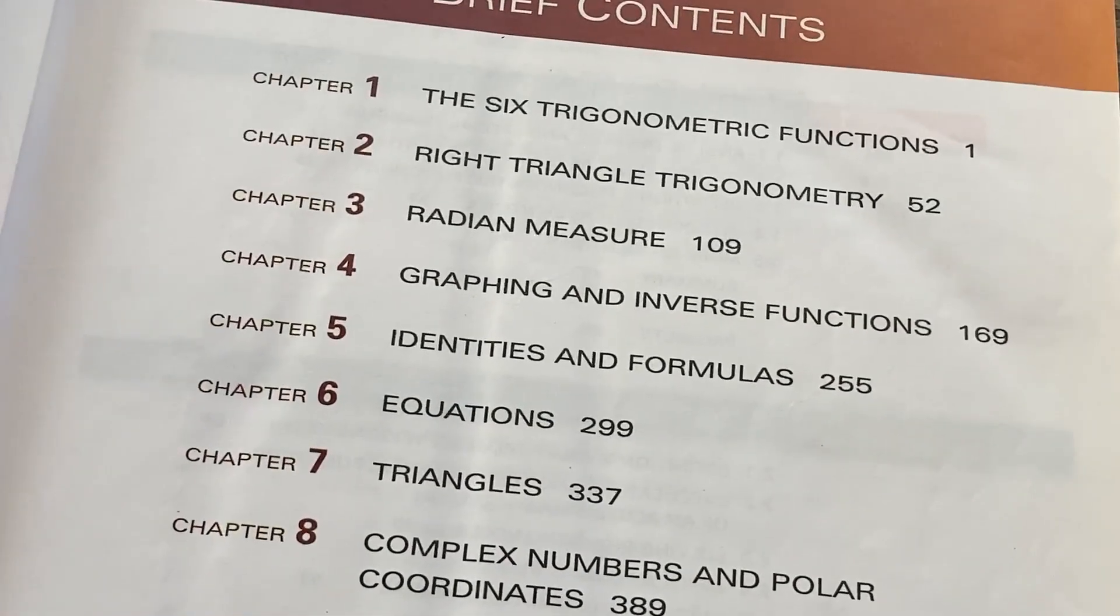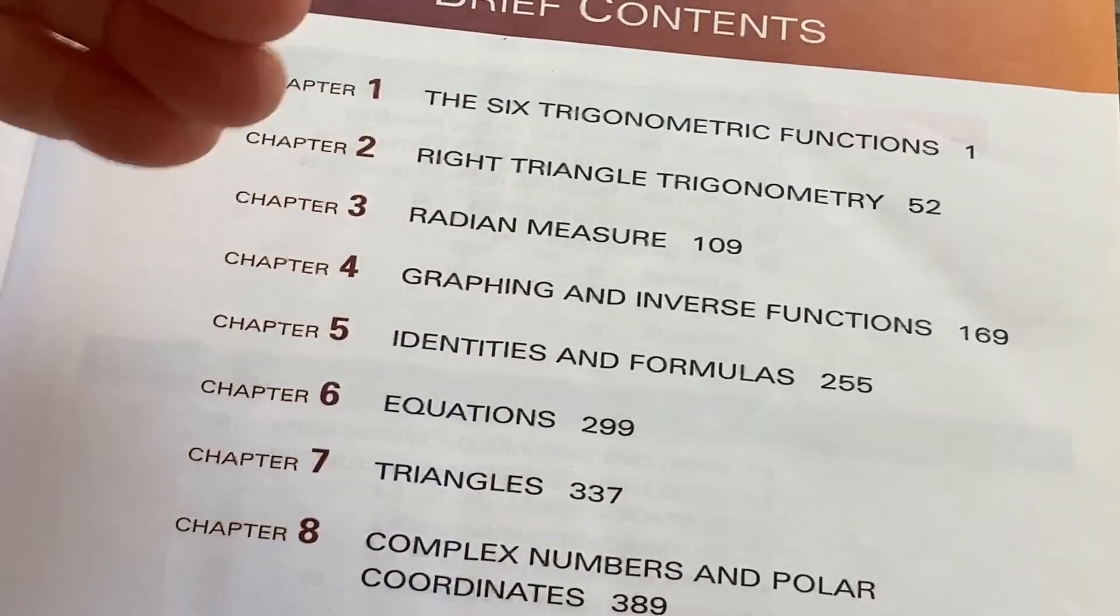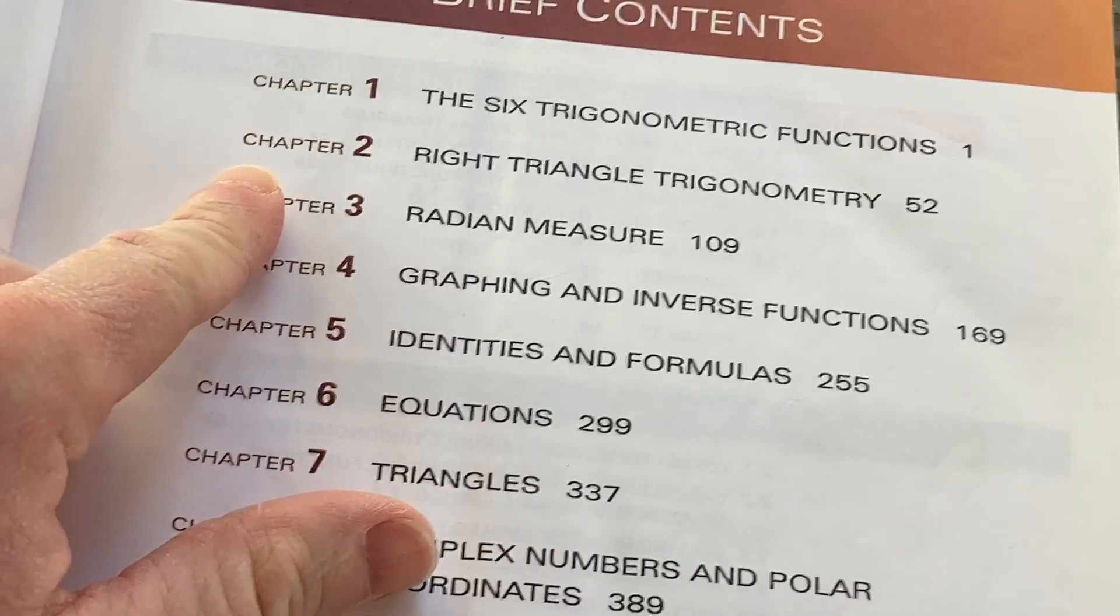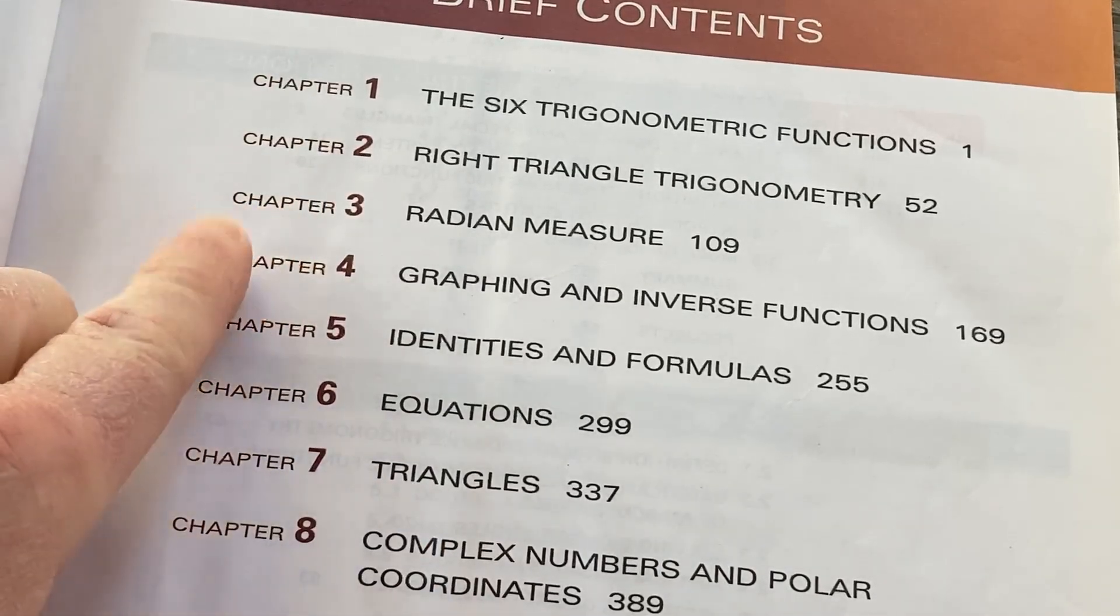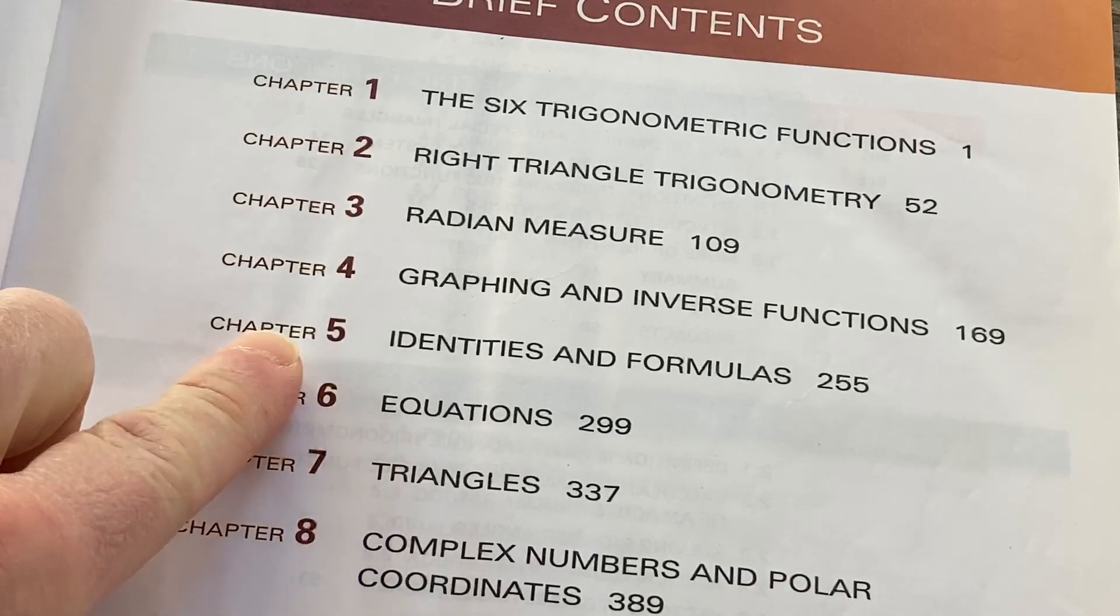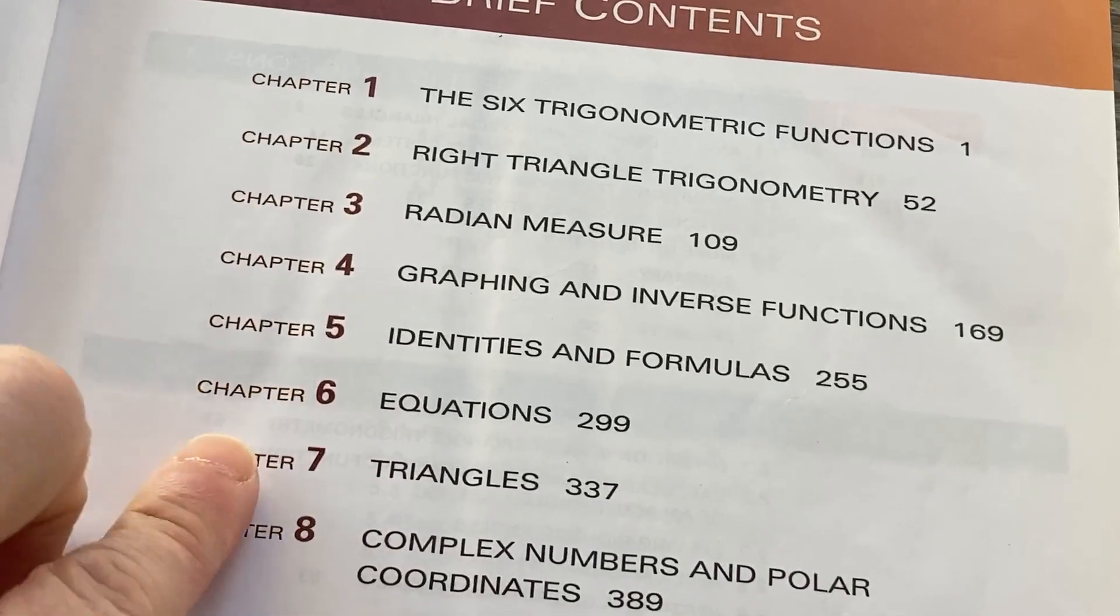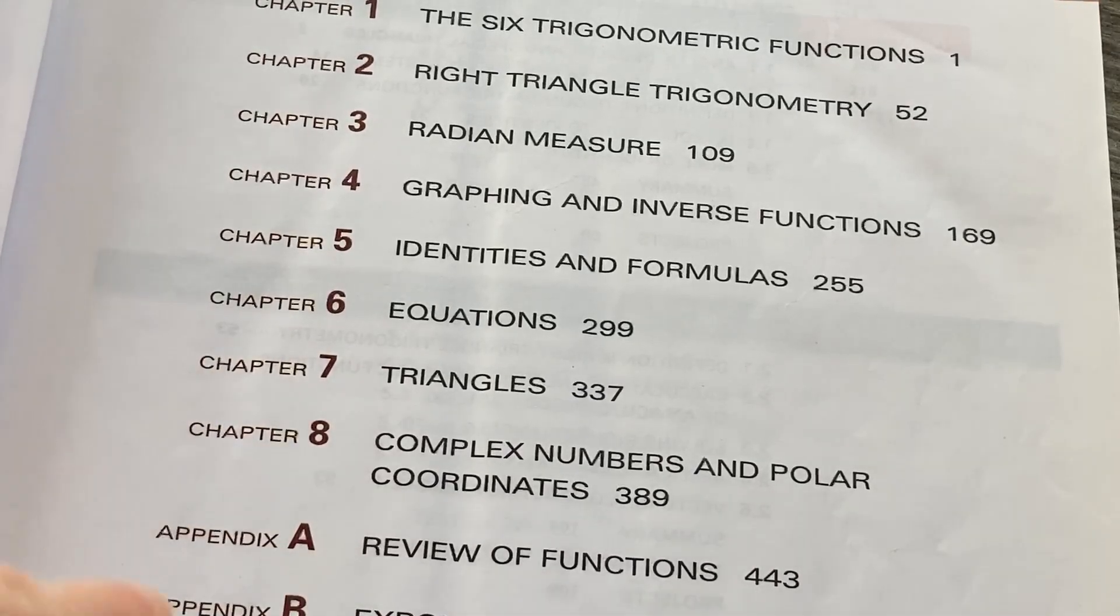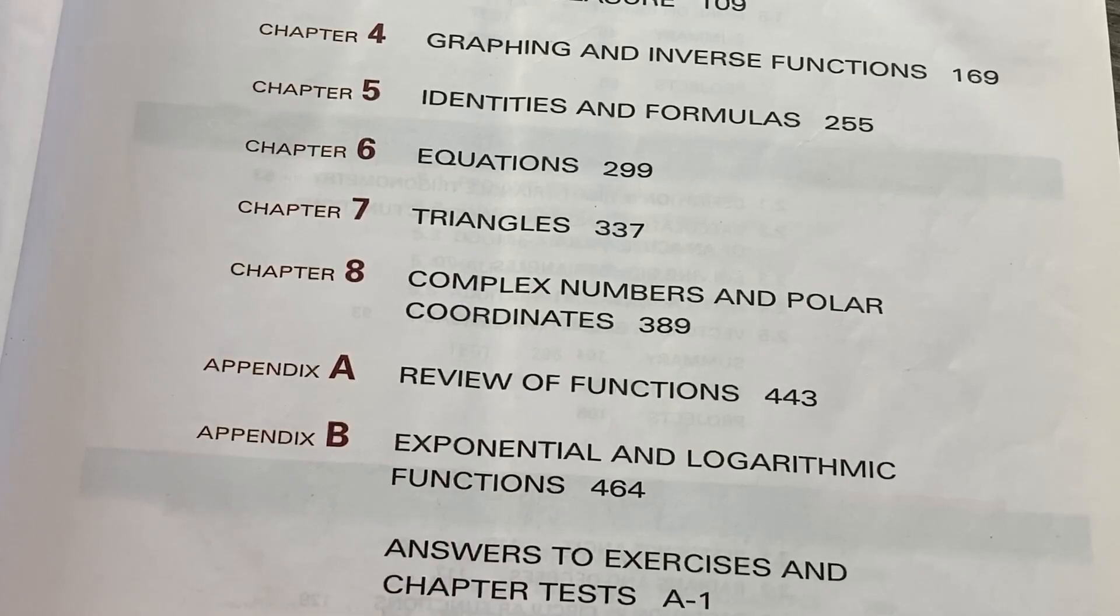So let's see here. It starts with the six trigonometric functions. That's how it starts, so right away, the six trig functions. Chapter two is on right triangle trigonometry. Three is on radian measure. Four is graphing and inverse functions. Five is identities and formulas. Equations, triangles, complex numbers and polar coordinates. And that's it. There's a review of functions, some stuff with exponentials and logs, and then answers.